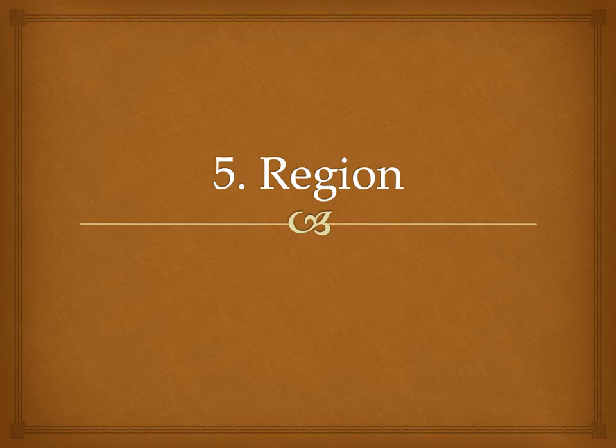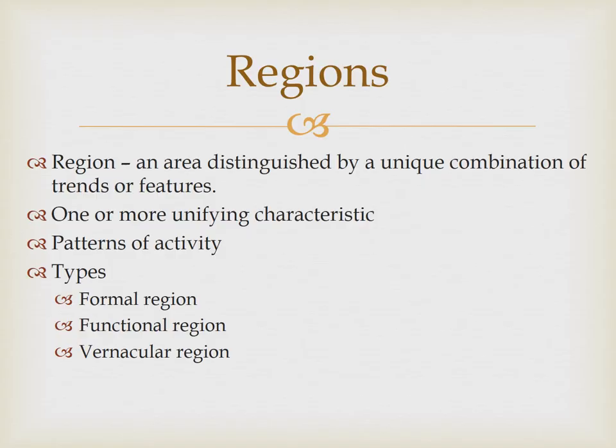A region is an area on the Earth's surface that is marked by a degree of formal, functional, or perceptual homogeneity of some phenomenon. The textbook definition is an area distinguished by a unique combination of trends or features. In much the same way that a writer divides a book into chapters and names or classifies them, geographers divide areas into regions that have some unique combination of features.